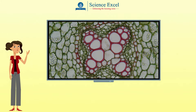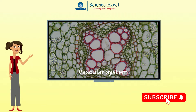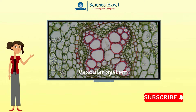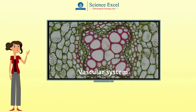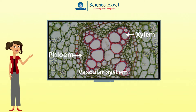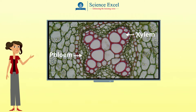In plants, a network of tissues and fibers called the vascular system carries out this task. The vascular system is a part of the transport system in plants which is comprised of two types of tissues: the xylem and the phloem. The xylem and the phloem are found in groups called vascular bundles.